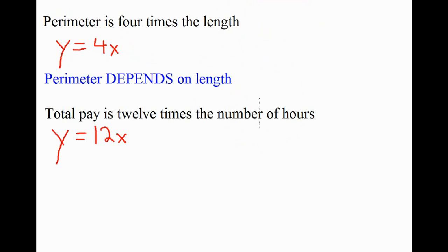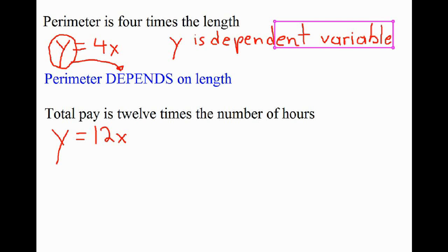Looking at both examples so far, the first relationship was perimeter related to the length of a square's side, with the equation y equals 4x. We can say that the perimeter depends on the length — as the length changes, the perimeter changes. This tells us which variable is the dependent variable. Since perimeter was represented by y and depends on length, y is the dependent variable. Oppositely, x is the independent variable.